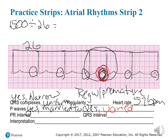Let's figure out our PR interval — going from the start of the P to the start of the QRS, that's about 3 boxes. So 3 times 0.04 equals 0.12 seconds.